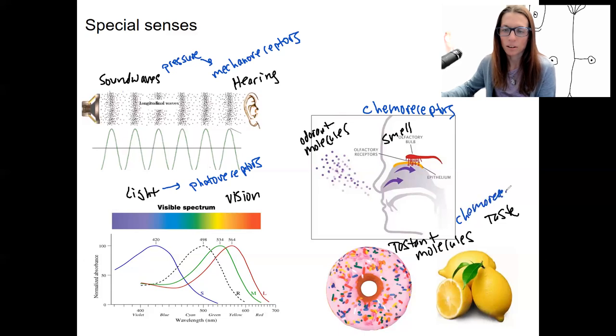So there are the sensory receptors. There's also balance. So the inner ear also relates to equilibrium and balance. That is also related to mechanoreceptors. And I won't be talking about that more, but that is also another special sense, is equilibrium and balance in the vestibular apparatus of the ear.